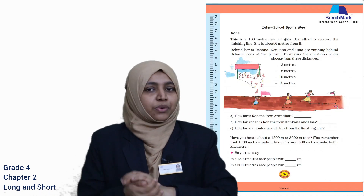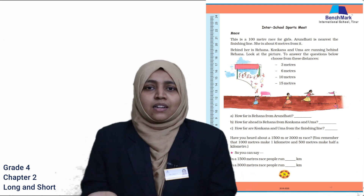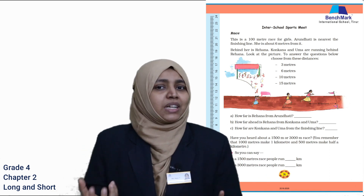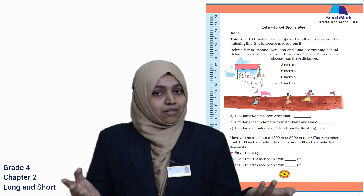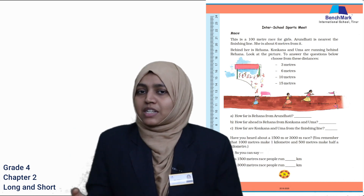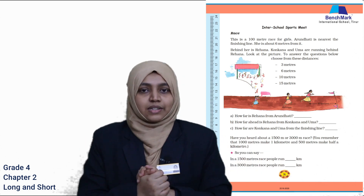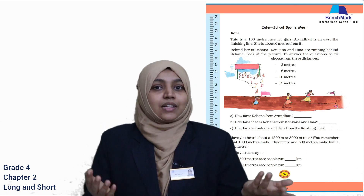You might have heard in sports: 100 meter race, 200 meter race, or 50 meter race. A 50 meter race means you run only 50 meters; a 100 meter race means you run 100 meters. You may have also heard of a 1500 meter or 3000 meter race. How much is 1500 meters in kilometers? One kilometer is 1000 meters, so 1500 meters is one and a half kilometers. And a 3000 meter race means they are running three kilometers.